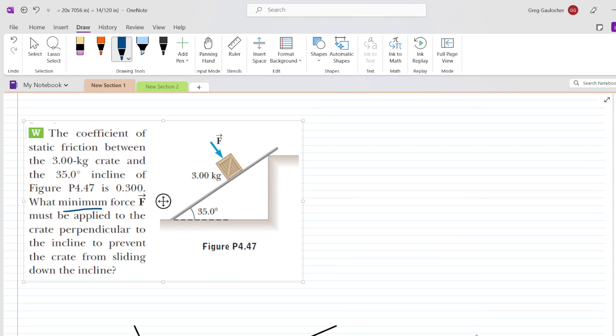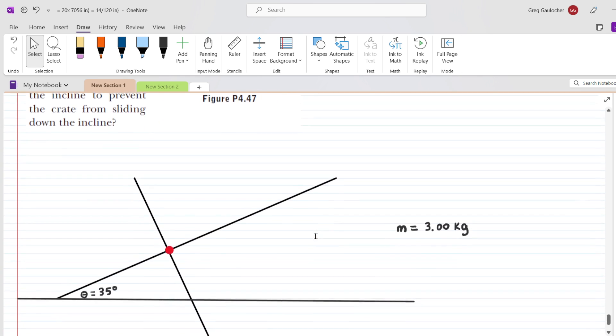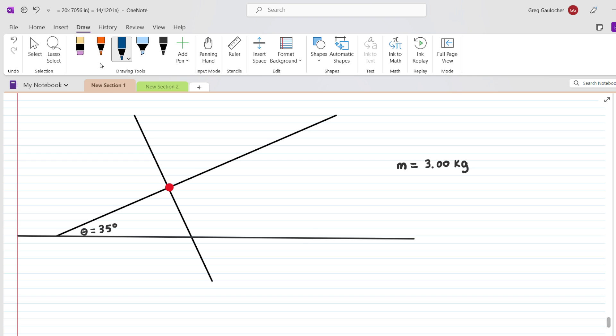In this question, we're trying to determine the minimum force F that needs to be applied perpendicular to the incline in order to prevent the crate from sliding down the incline. In order to do that, we have to draw a free body diagram illustrating the forces that are acting on the crate, which we have represented as this red dot.